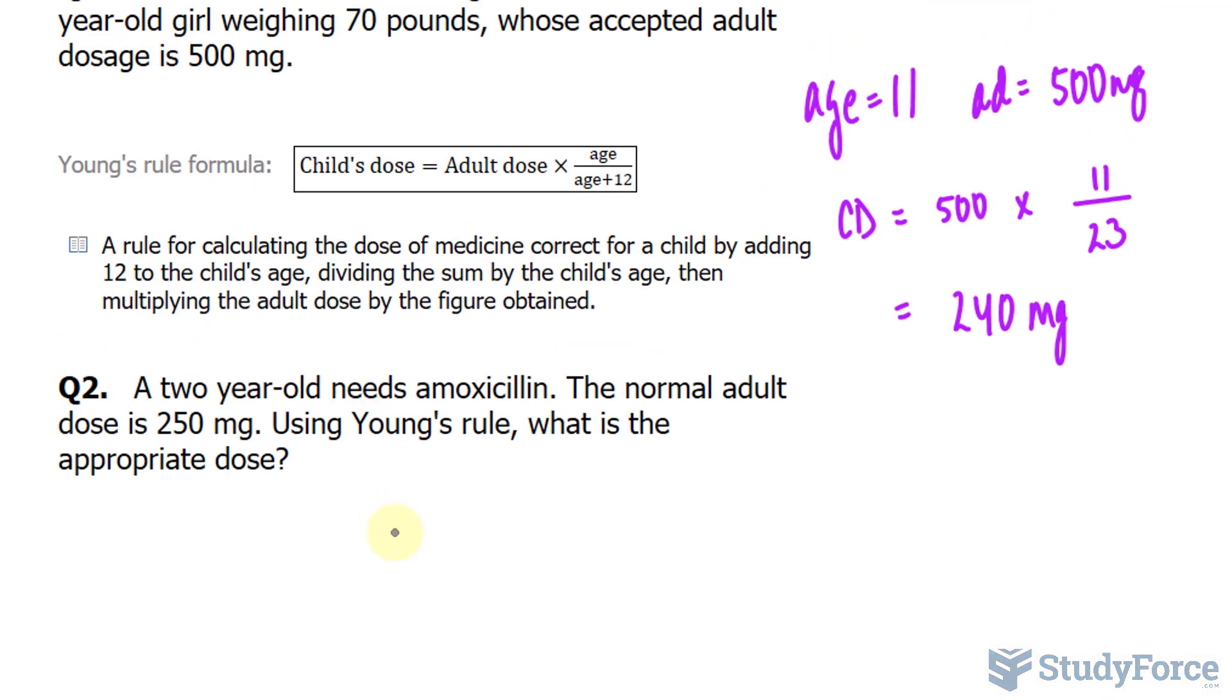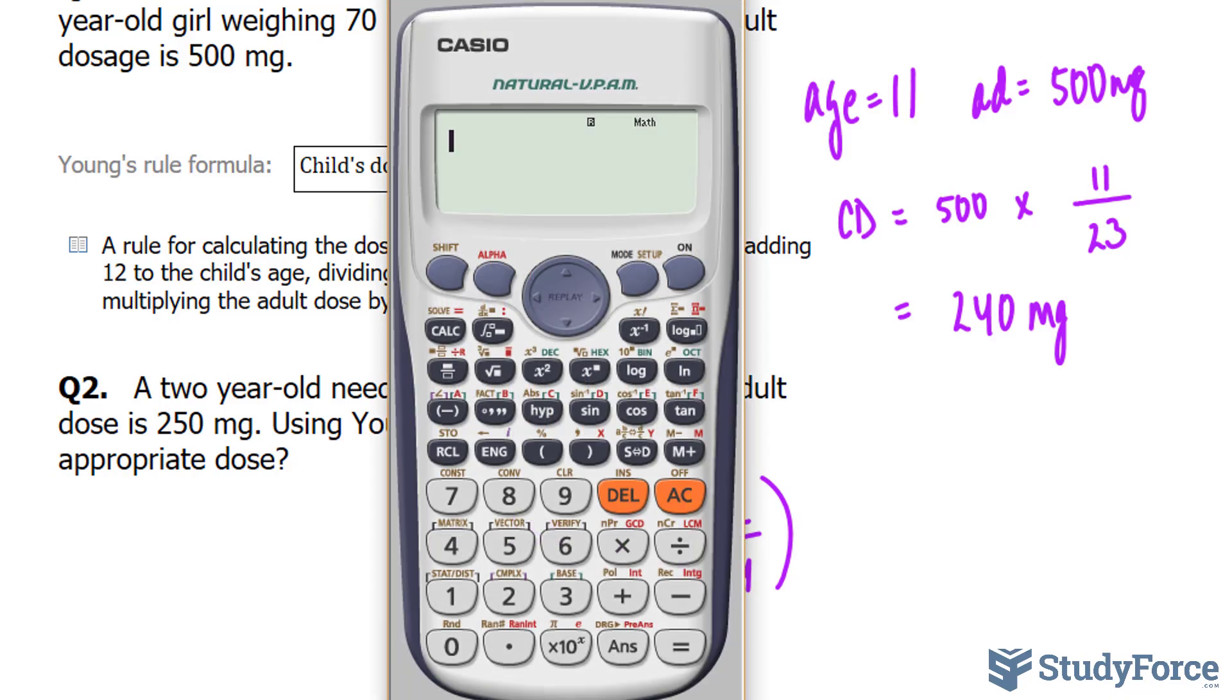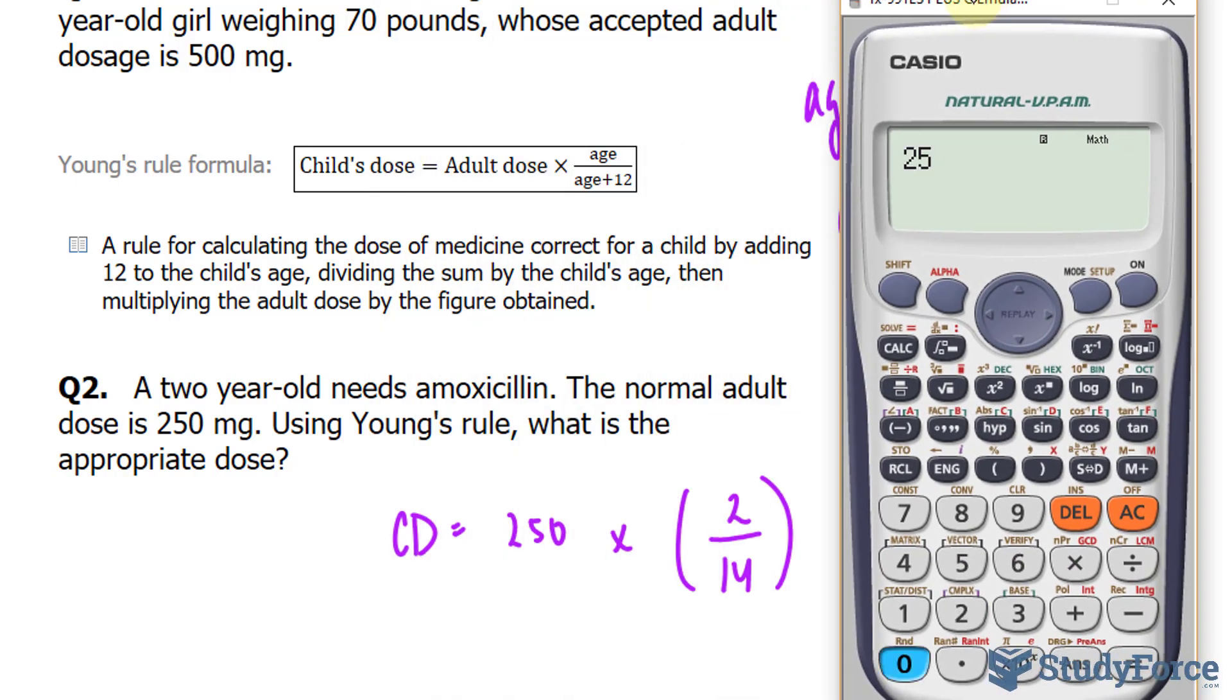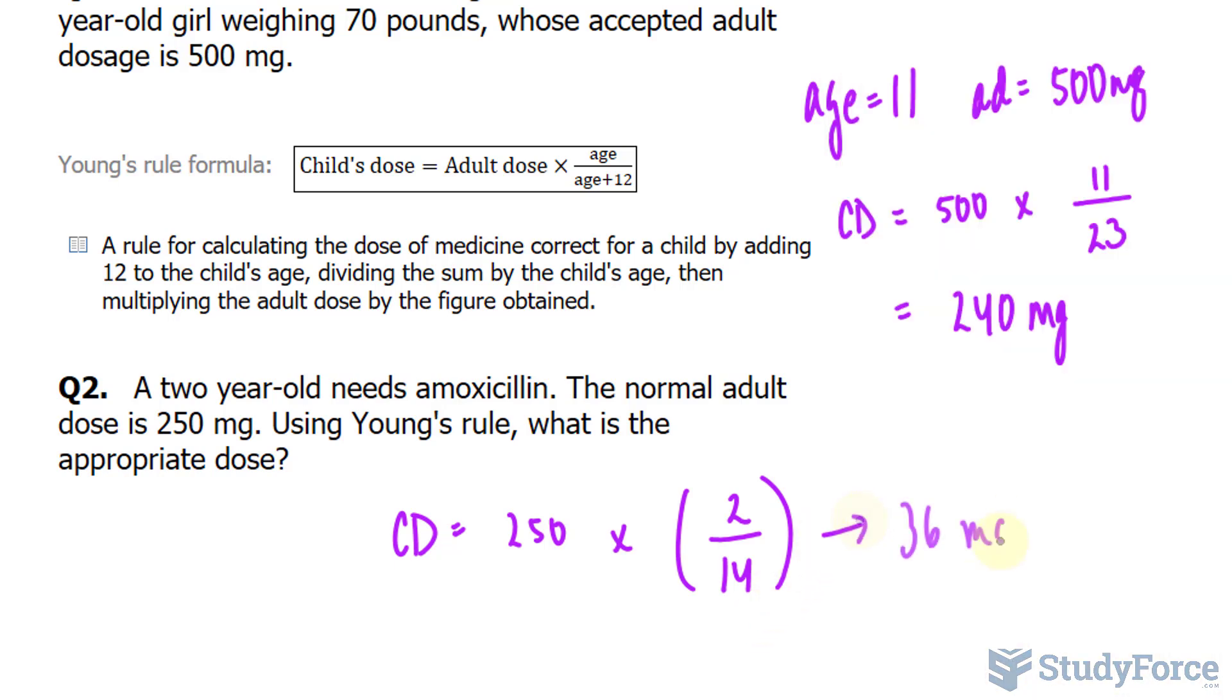So using the formula, we'll write down CD is equal to 250 multiplied by the age, which is 2, over 2 plus 12, that's 14. Let's use our calculator really quickly. We have 250 times 2 divided by 14, which gives us approximately 35.7. I'll round this up to 36. So for this 2-year-old, you would have to give him or her a 36 mg dose.